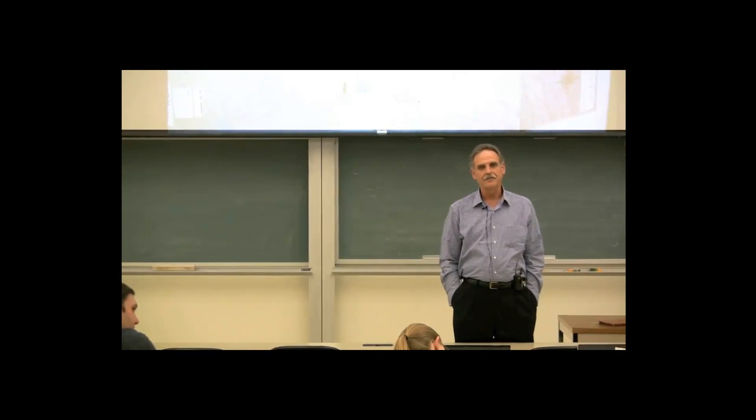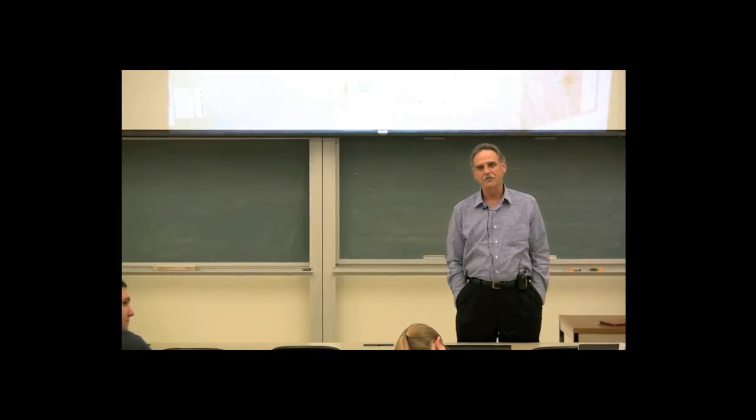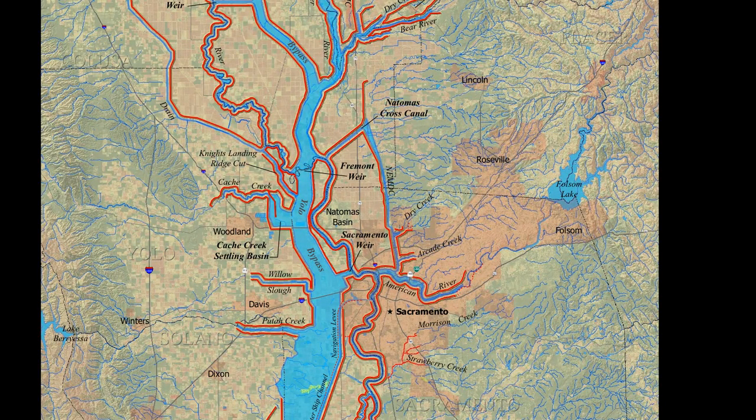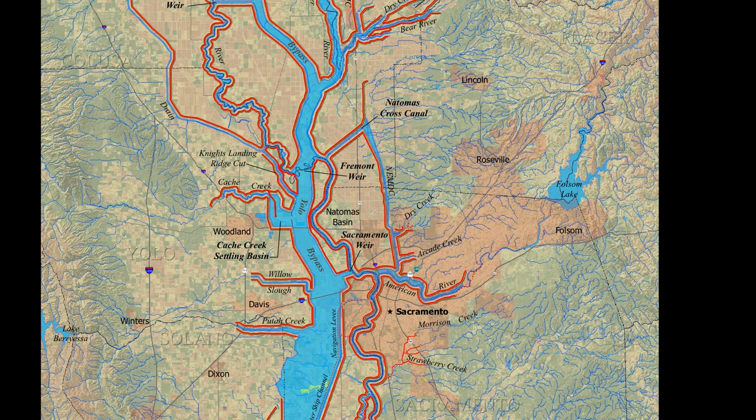The first thing to notice is this is an incredibly vast, complex system. All those red lines on the map are levees, and they're all part of a commonly administered system.